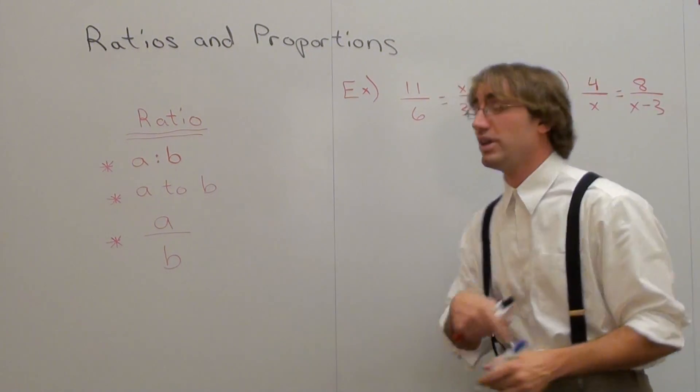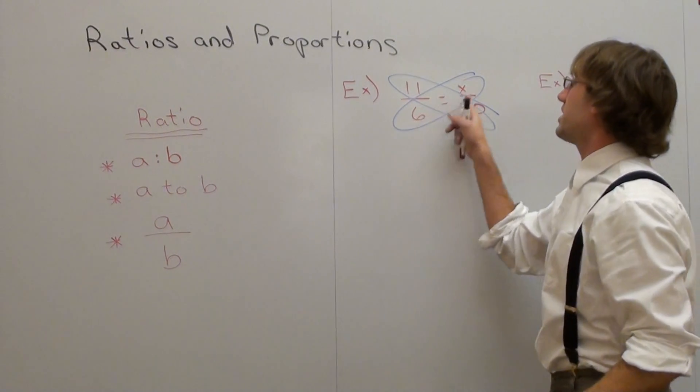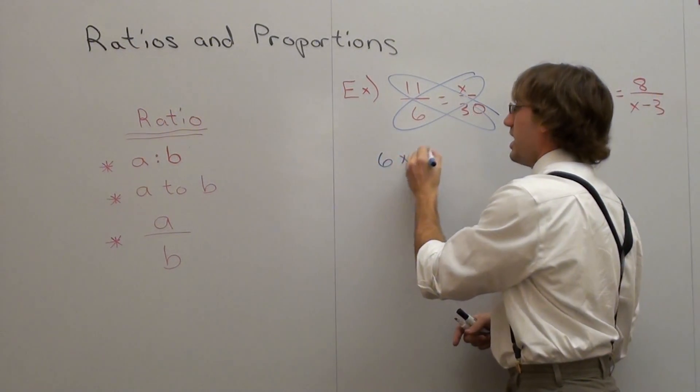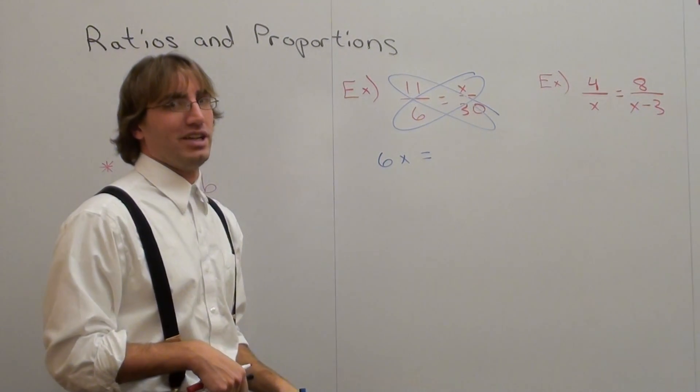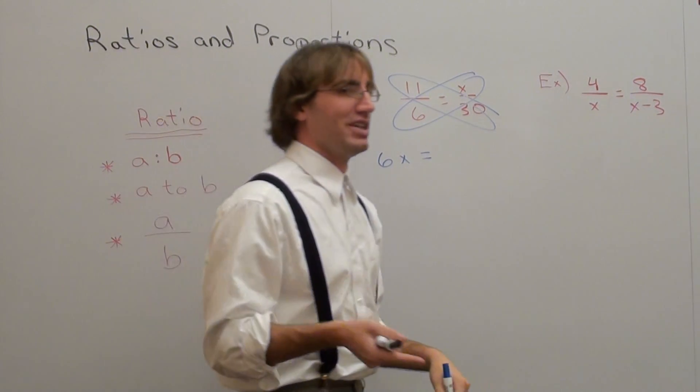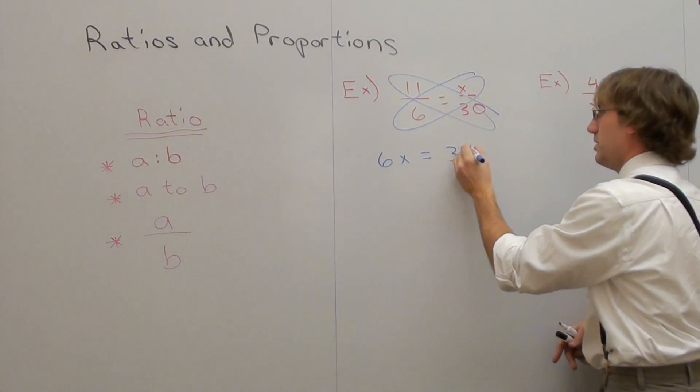So in this case, we're going to cross-multiply. 6 times x is 6x. 11 times 30 is 330. How did I know that? I don't know. 10 times 30 is 300, plus another 30 is 330. Big deal.